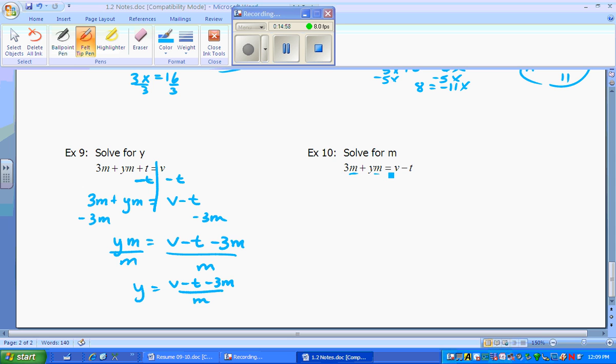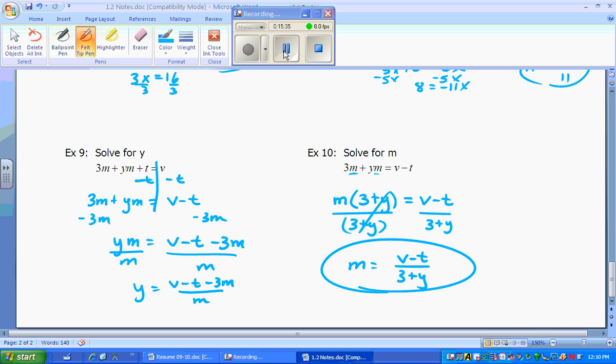In example 10, we want m. Ooh, m is on two variables. So here, we have to take this idea of back distributing. They both have an m in common. So if I can pull an m out of both of them, I'm left with 3 plus y, which is equal to v minus t. Well, I want m, so I've got to get rid of this combination now. So I'm just going to divide by 3 plus y. Cancels that out. 3 plus y over here. So m is equal to v minus t over 3 plus y. And we are done with lesson 1.2, day 1. Bye, bye, bye. Thank you.